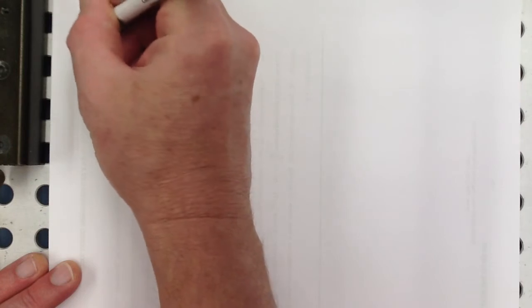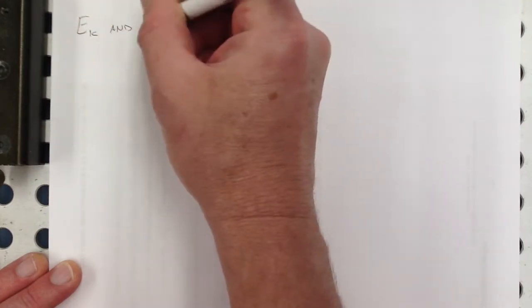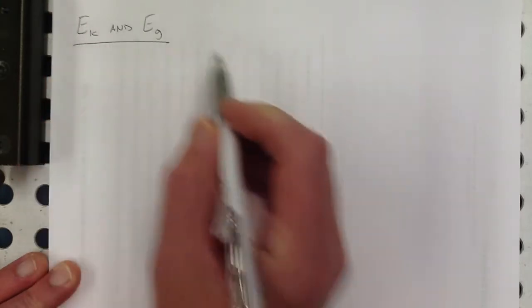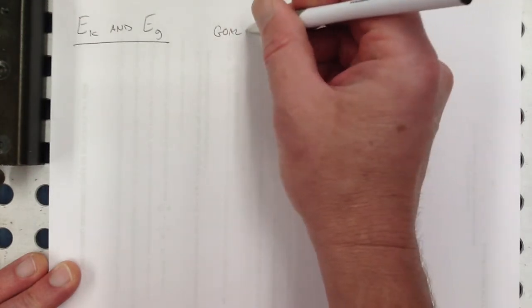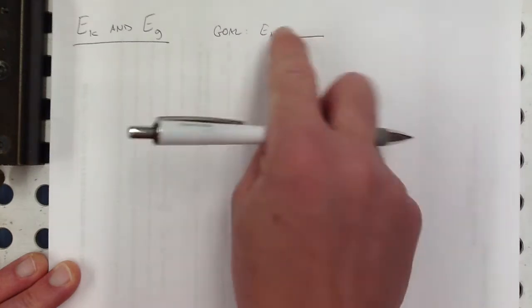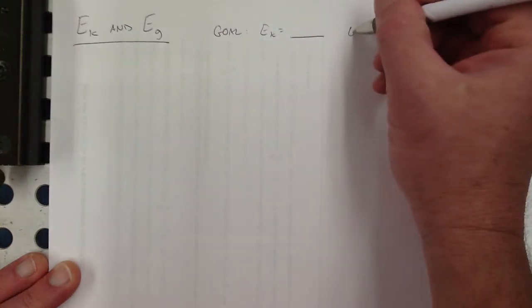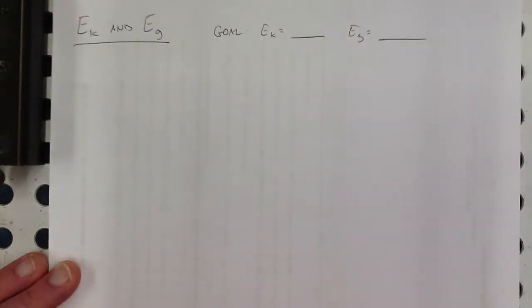All right, physics students, we're going to talk today about mathematical models for kinetic and gravitational potential energy. In other words, how do we make equations? Our goal will be to have by the end of these notes that E_k is equal to something, that we have some kind of expression for that, and that gravitational potential energy is equal to something, we have some expression for that.